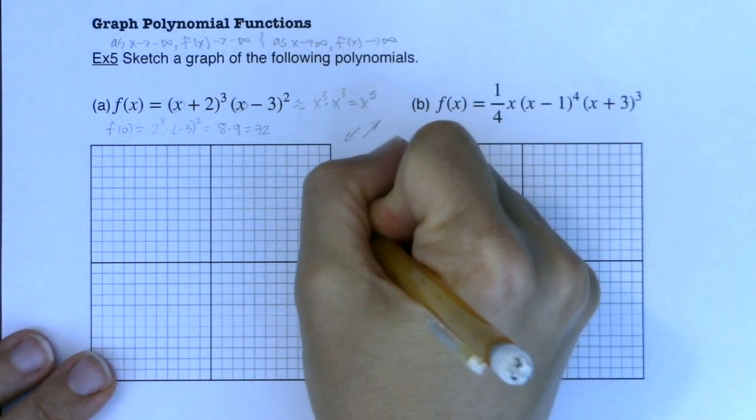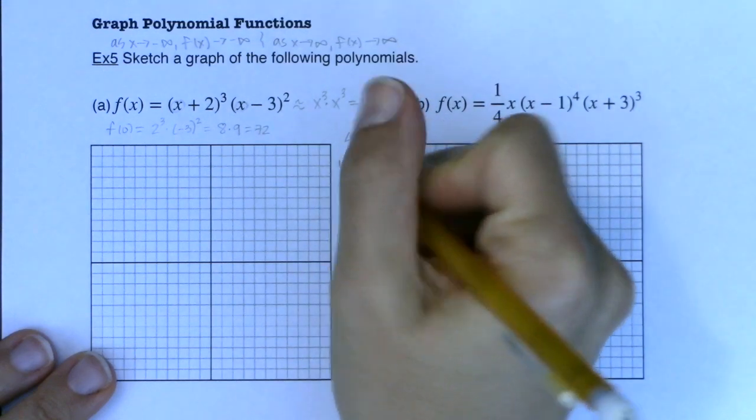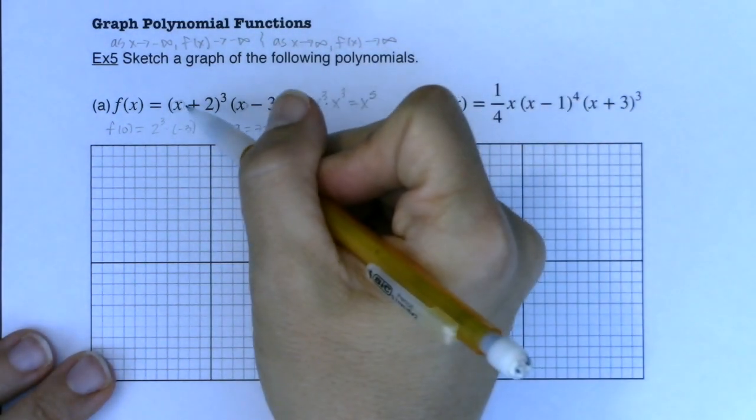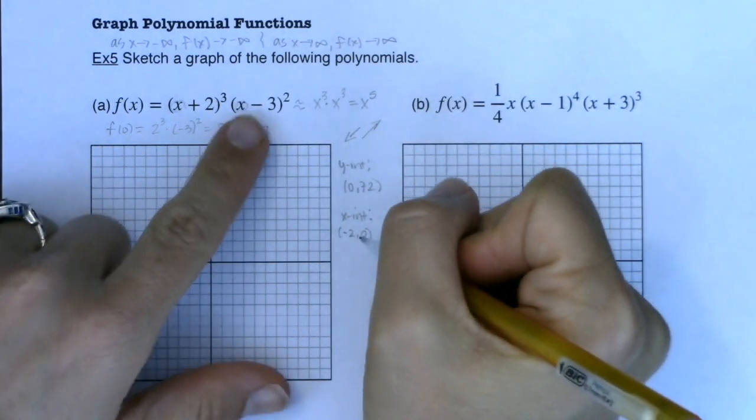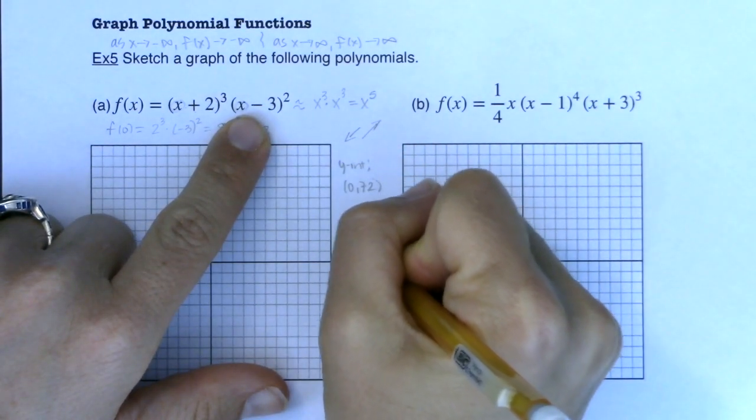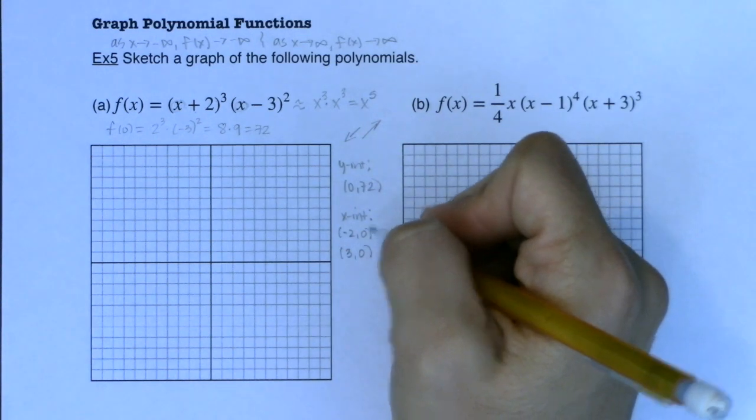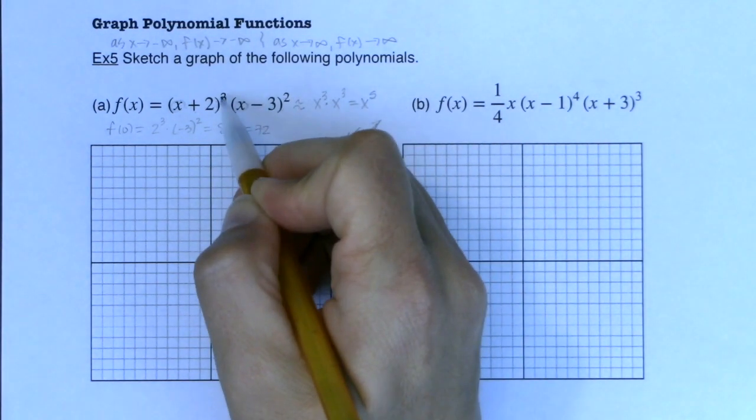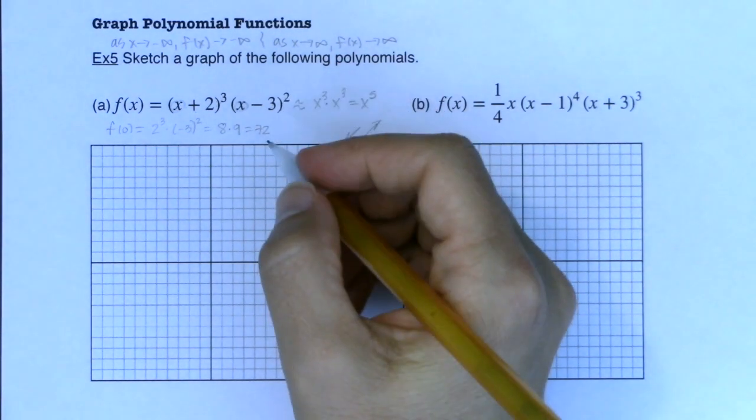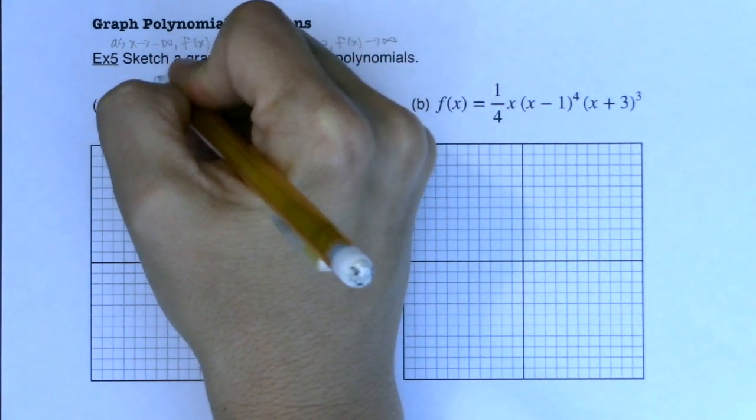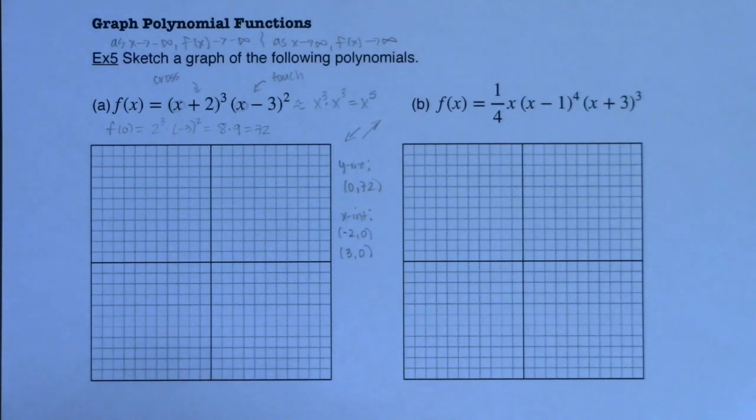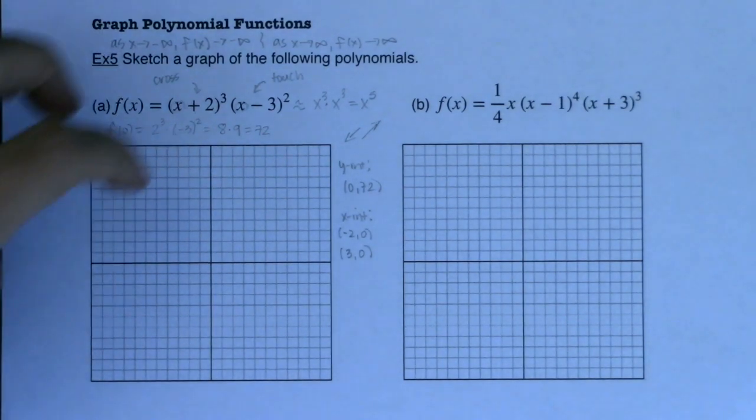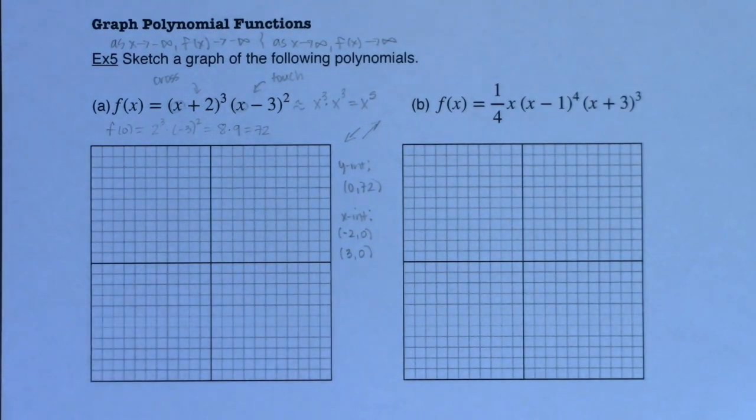End behavior, remember back from our previous section, if we have an odd degree polynomial with a positive lead coefficient, we have some end behavior. We know that the right end is up and the left end is down. That's the end behavior. So we know that when I go to graph this, this end is going to come up, this end is going to come down.